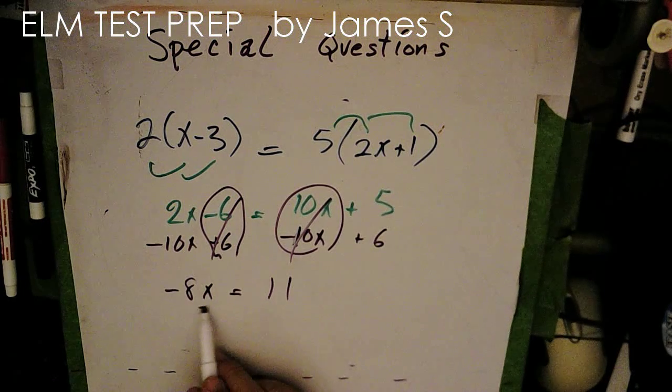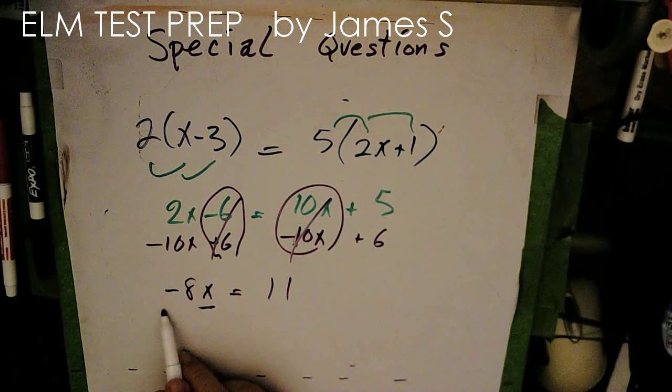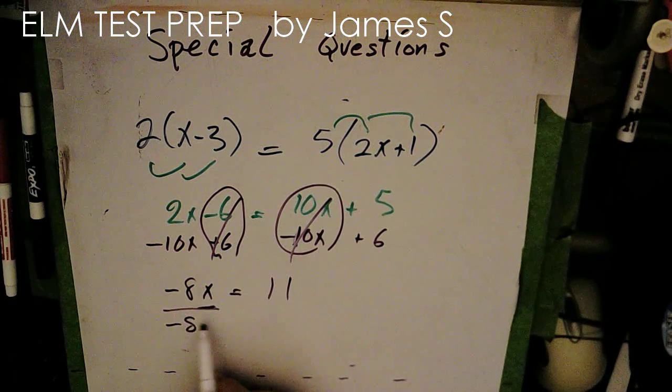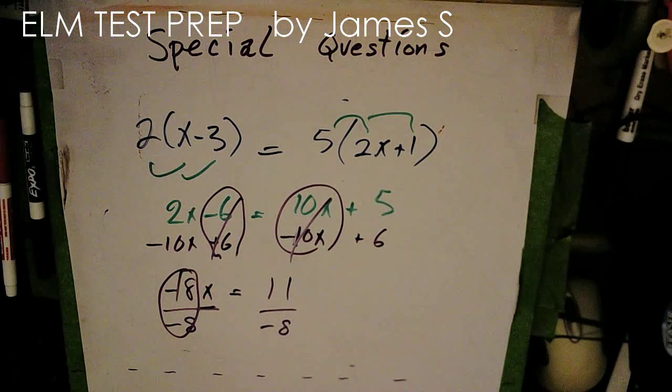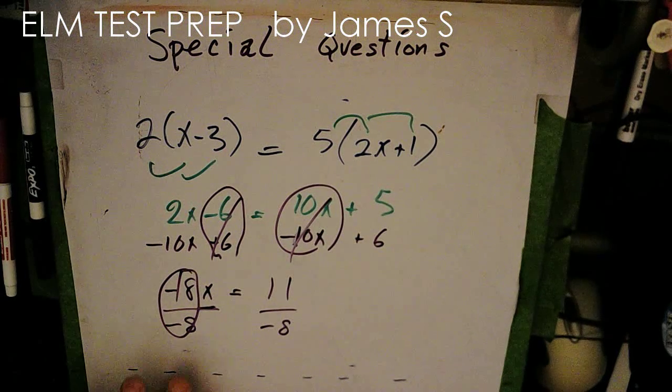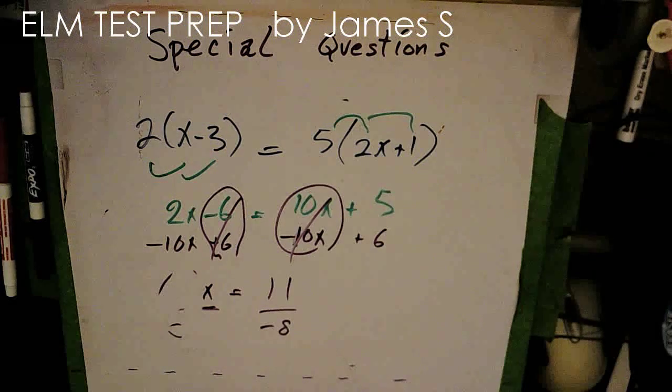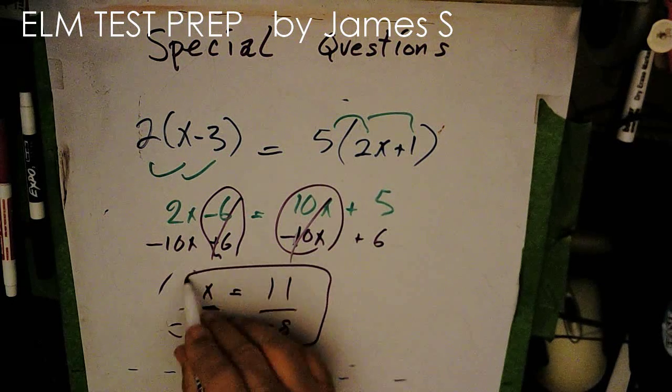Well, my final step here for solving for x, of course, is to divide both sides by minus 8. Minus 8 divided by minus 8 is just 1. And so 1x is just x. And I have my final answer.